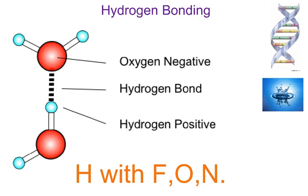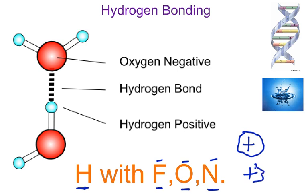Hydrogen bonding arises when you have hydrogen in contact with either fluorine, oxygen, or nitrogen. What happens is hydrogen has one proton and one electron in its electron cloud. A strong, highly electronegative element — like fluorine, oxygen, or nitrogen — is able to partially pull away that cloud, causing the proton to be exposed. The element has to be small and have very strong electronegativity, and F, O, and N fit those requirements — it's unique to these three elements and nothing else.